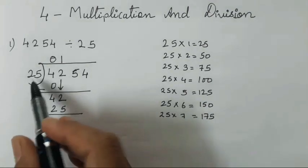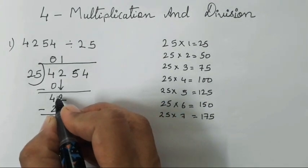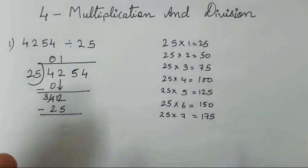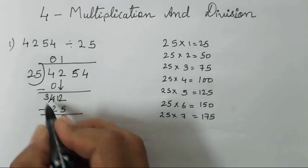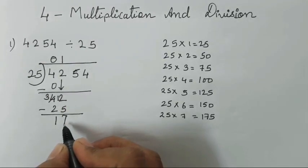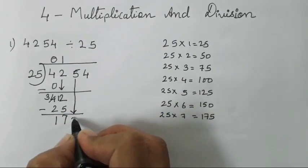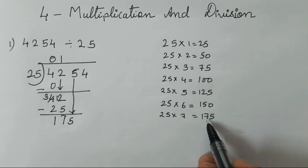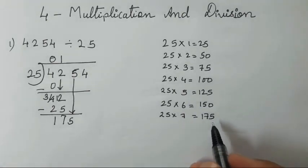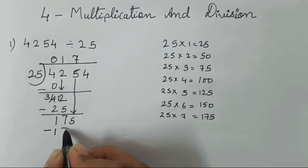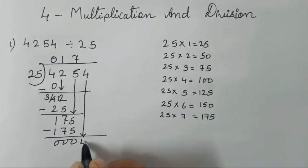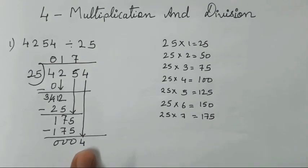25 times 1 is 25, so simply subtract. Borrow 1 from 4, making it 3. Count up from 5 to 12: that gives 7. So 3 minus 2 is 1, giving us 17. Now 17 does not appear in the 25 table, so bring the 5 down — making 175. Does 175 come in the 25 table? Yes it does! Writing the table helped us find it directly: 25 sevens are 175.